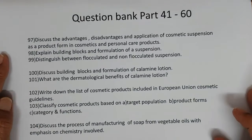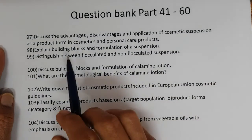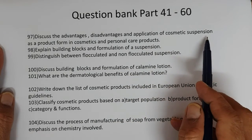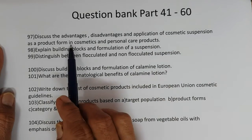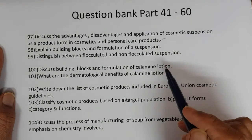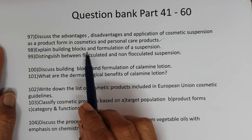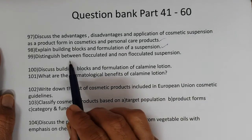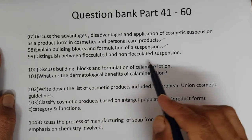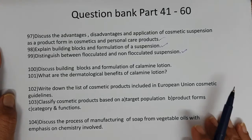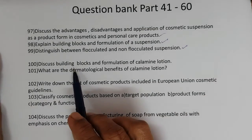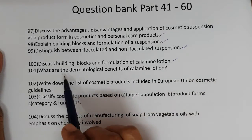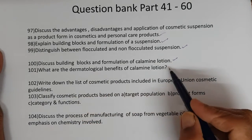Question 97: Discuss the advantages, disadvantages, and application of cosmetic suspension as a product form in cosmetics and personal care products. Explain the building blocks and formulation of a suspension. Distinguish between flocculated and non-flocculated suspension. Discuss the building blocks and formulation of calamine lotion. What are the dermatological benefits of calamine lotion?